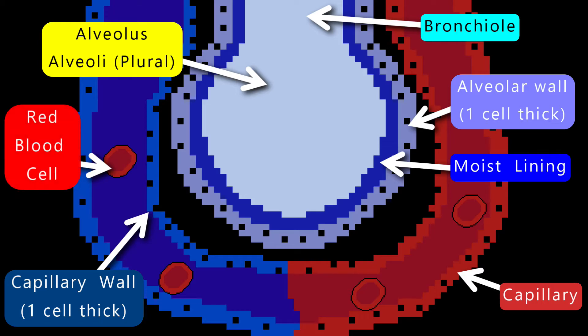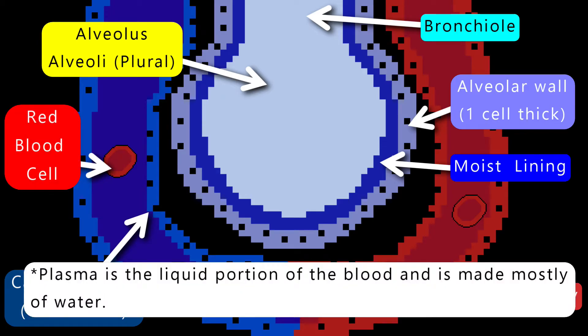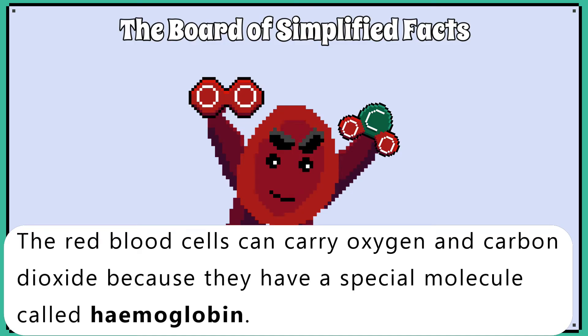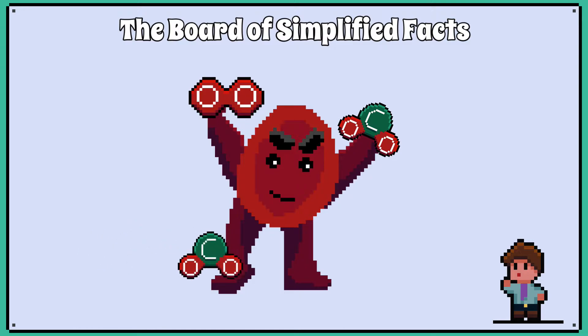The blood flowing through the capillaries has red blood cells and blood plasma. The red blood cells can carry oxygen and carbon dioxide because they have a special molecule called haemoglobin. But some carbon dioxide is also found dissolved in the blood plasma.